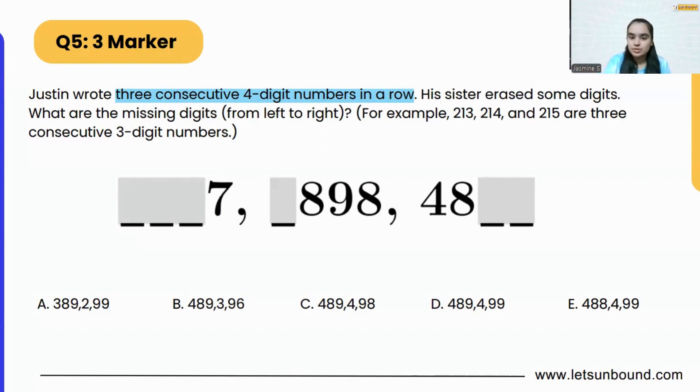What are the missing digits from left to right? For example, 213, 214, and 215 are three consecutive three-digit numbers. So what are consecutive numbers? They are the numbers which are in a row, like one, two, three. They are consecutive numbers in a row, next to each other.